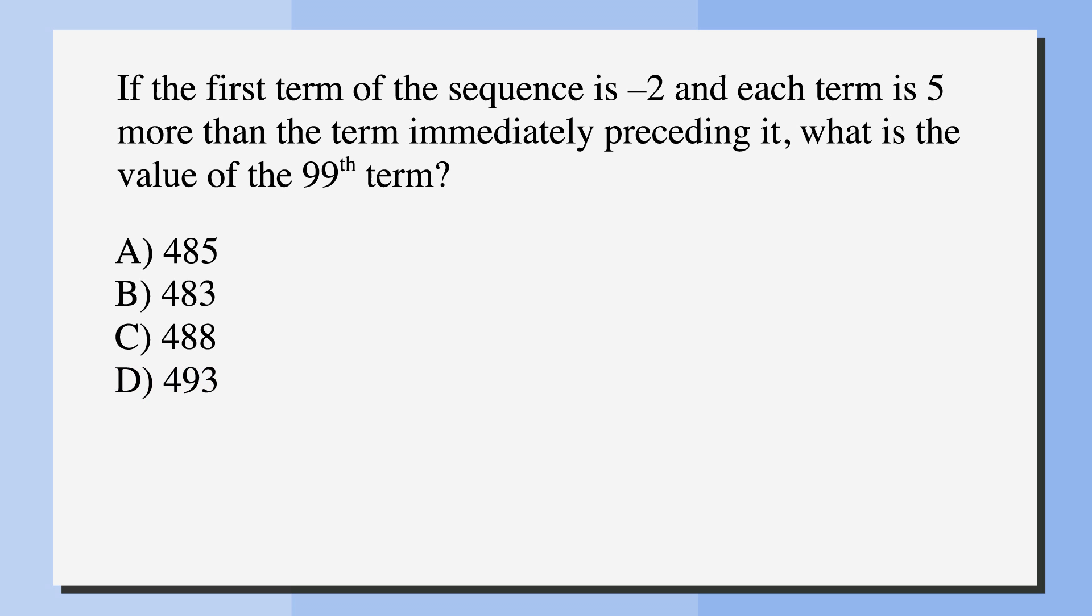Start by underlining the facts: first term, -2, and each term is 5 more than the term immediately preceding it. And we want to circle the key term, 99th term. We're given information about the pattern, but not shown the pattern. So let's write it out until we can see it.